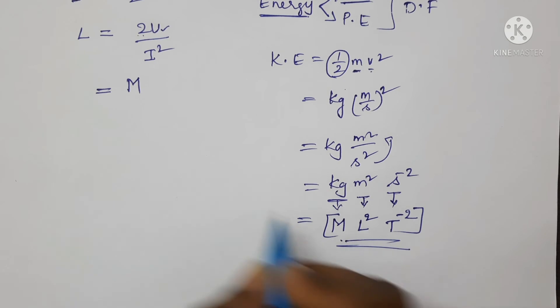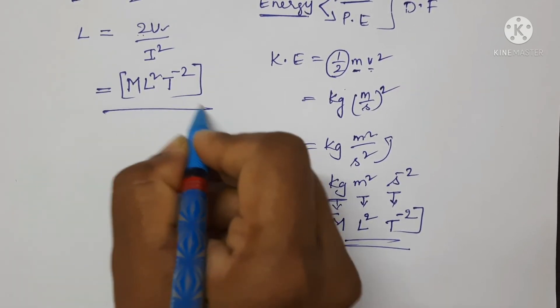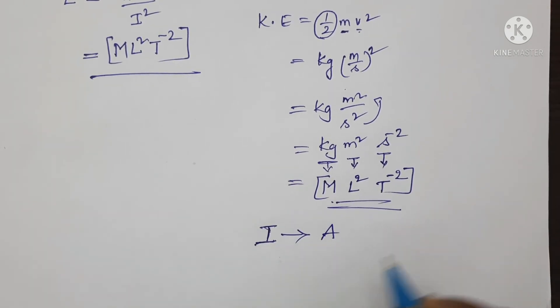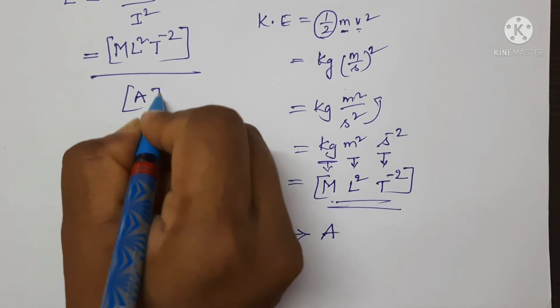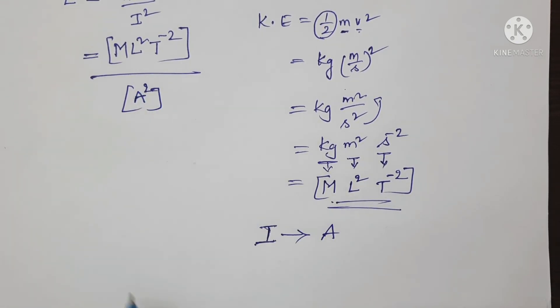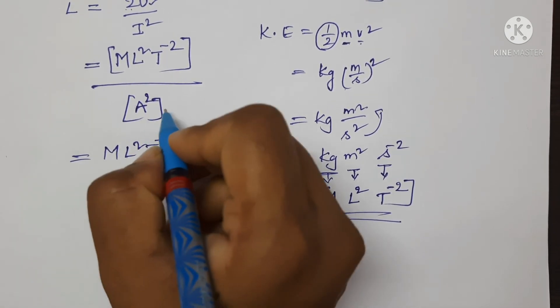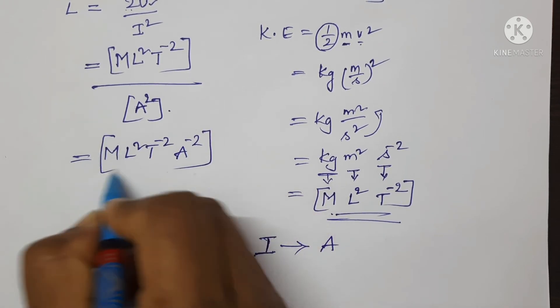Here we got M L squared T power minus 2. In the denominator, I is there. The SI unit of current is ampere, so replace current with ampere squared, which is A squared. Now simplify: M L squared T power minus 2, and write A squared on the numerator as A power minus 2. This is the dimensional formula for inductance.